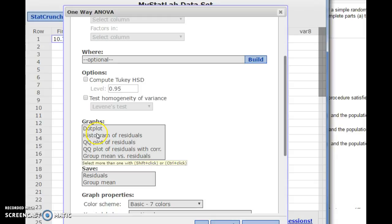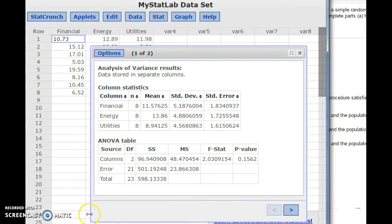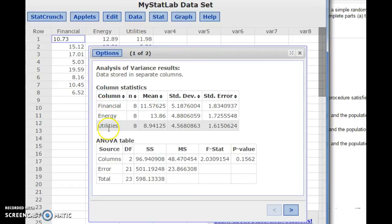And you want to see the plot of residuals. So compute that. For each sample, it breaks down the mean and the standard deviation for each of the individual samples. But then down here is your ANOVA table. Here's your test statistic and your p-value. Since p-value here is bigger than alpha, we will not reject our null hypothesis.